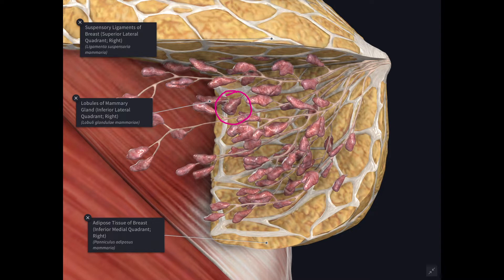Then you have the fibrous tissue. These white color fibrous tissues support the lobes and they form a number of septa, which anchor the parenchyma to the overlying skin and underlying pectoral fascia. These fibrous bands are known as the suspensory ligaments of Cooper. The growth of malignant cells from breast cancer may extend along these ligaments and produce dimples of the overlying skin or fixation of the lump to the pectoralis major muscle.